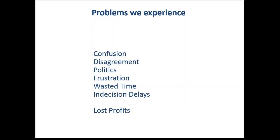Don Reinertsen, one of our favorite authors and lean gurus, introduced us to a very powerful solution. He very often asks his clients during workshops how much it would cost the company if a product launched a month late. There's very often a hundred-to-one variance — one person will say $10,000, someone else will say a million dollars. A fifty-to-one kind of variance, $20,000 to $1 million, is kind of an average based on the data he's gotten.